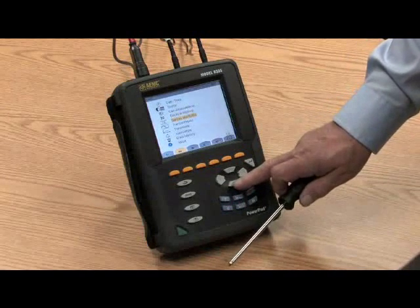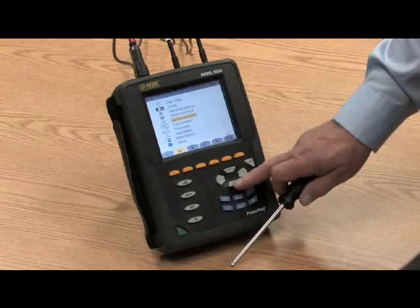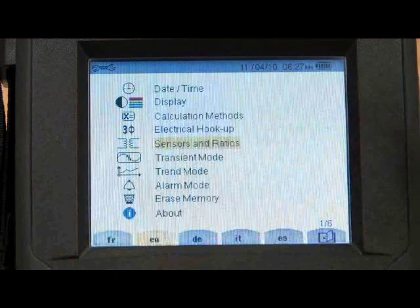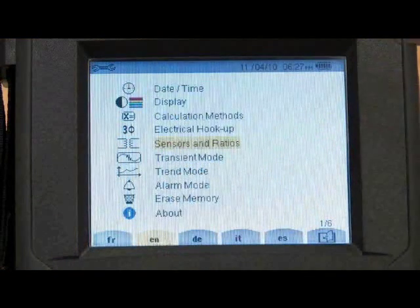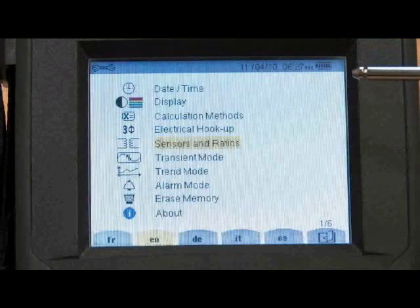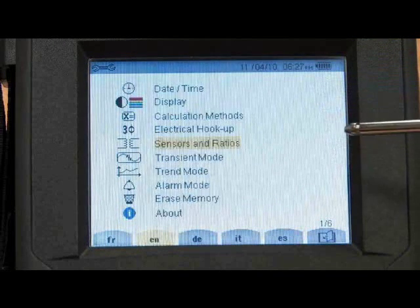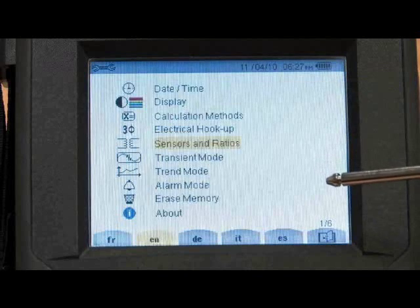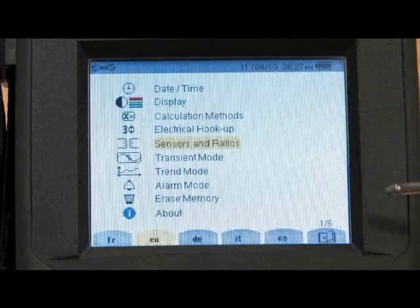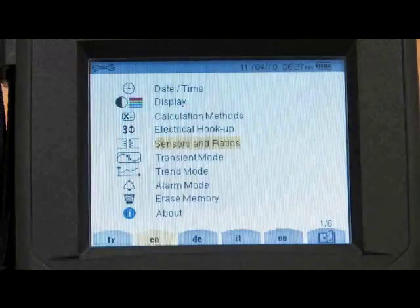If I go to sensor selection here, we have an opportunity to determine which sensors we're going to use to measure current. However, the model 8335 is a smart recorder. It automatically knows what sensor is plugged into it and calibrates to it. We'll talk a little bit more about sensors in a few minutes.